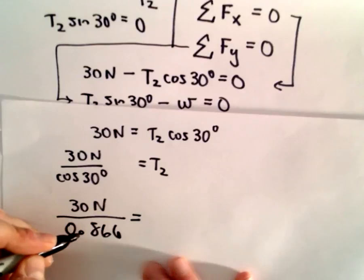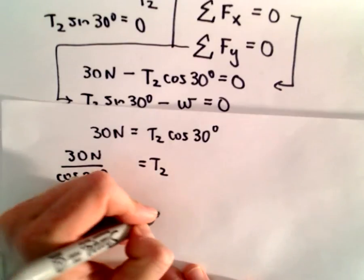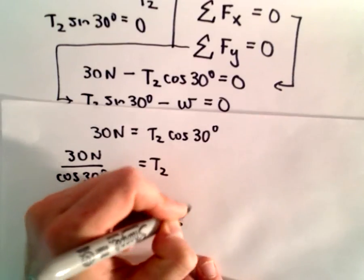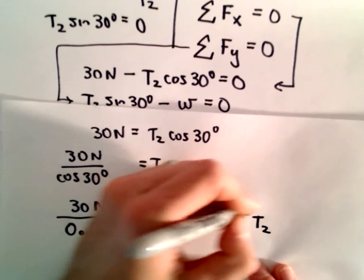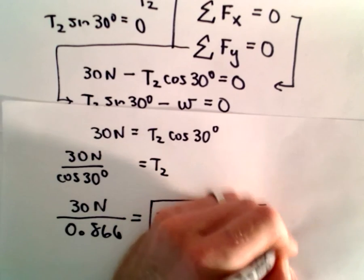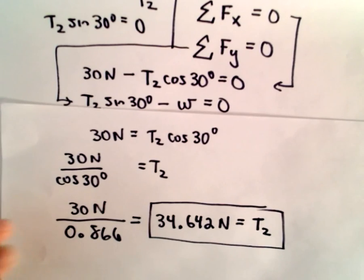So, 30 divided by 0.866, I'm getting that to be 34.642, again, newtons. That's going to be the tension, the tension in our second cord.